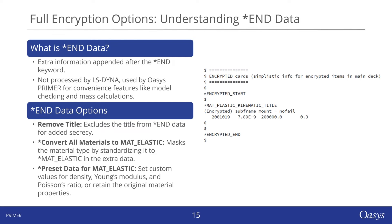In the encryption tool, we offer a few end data options. These include the ability to remove the title from the keyword, and you can also convert all materials you want to encrypt to mat elastic, which obscures the material type. With this option, you can use preset data for your material keyword — like setting custom values for density, Young's modulus, and Poisson's ratio — or opt to keep the original material properties visible. These choices provide flexibility, enhancing the security and functionality of your fully encrypted keywords.